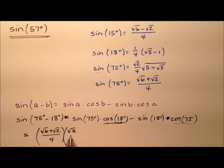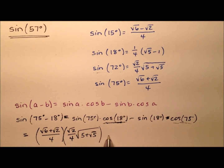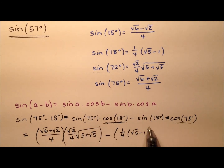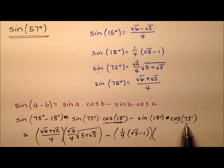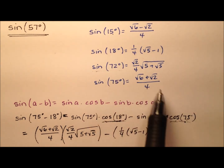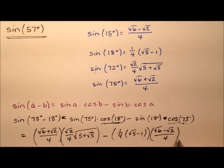So the sine of 72 replaces the cosine of 18 — they are the same value. I'll write this as the square root of two over four multiplied by that square root expression. From that, I subtract the sine of 18, which is one fourth times the square root of five minus one, multiplied by the cosine of 75. We change that to the sine of 15, since 75 and 15 are complementary angles, giving us the square root of six minus the square root of two, all over four.